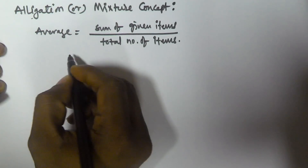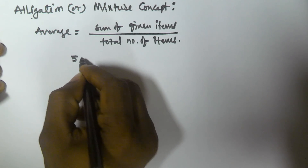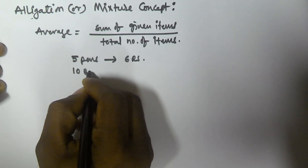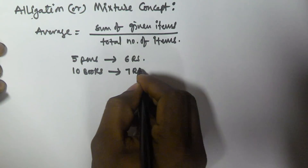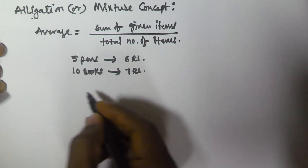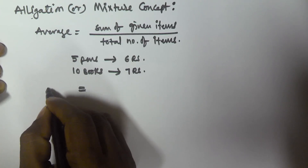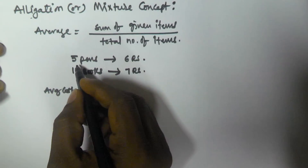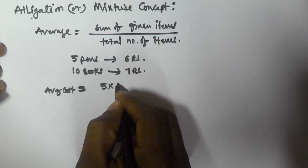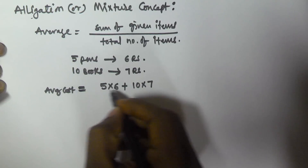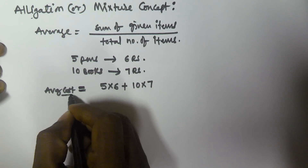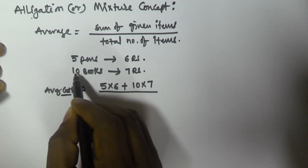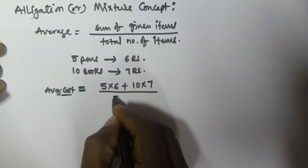For example, there are 5 pens and each pen costs 6 rupees, and there are 10 books and each book costs 7 rupees. So what is the average cost of each item? Average cost is equal to the sum of the given items — that is 5×6 plus 10×7 — divided by the total number of items, which is 5 plus 10.